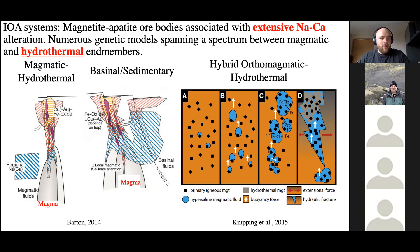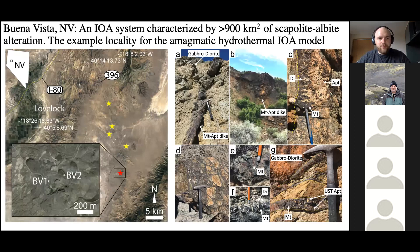The first system I looked at is called Buena Vista, located in west-central Nevada. The Buena Vista system is associated with the Humboldt-Mafic complex, which hosts a number of IOA deposits. The IOA mineralization is characteristic — ranging from massive replacement bodies to magnetite-cemented breccias, as well as a classic feature of IOA systems: magnetite-apatite dikes with well-developed unidirectional solidification textures (USTs) defined by minerals like apatite and diopside.